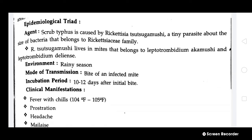The first component is the agent, which is Rickettsia tsutsugamushi — a tiny parasite about the size of bacteria that belongs to the rickettsia family. This tiny parasite causes the disease and lives in mites belonging to Leptotrombidium akamushi and Leptotrombidium delinease.